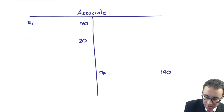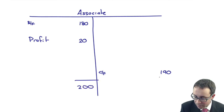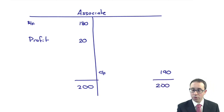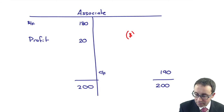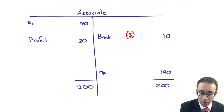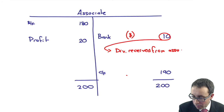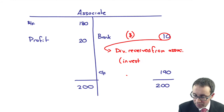So you've got that figure of 20 — that's the profit figure. When you balance everything up, you have 200 on the left and 200 on the right. The balancing figure effectively is that bank figure, which is 10. Because what you've done is you've received money from the associate — you've debited the bank and credited the associate account — again, 10. That 10 is your dividend received from the associate, and it goes into your investing activities, like all dividends received.